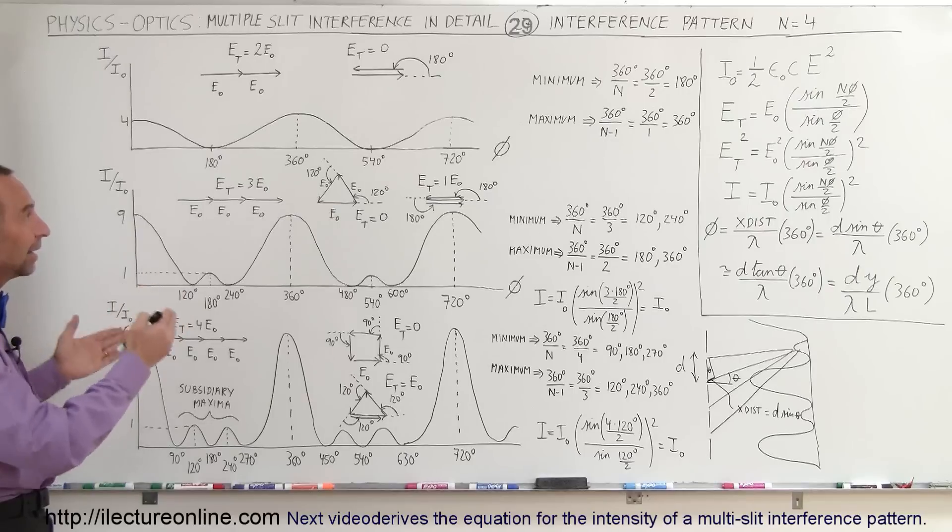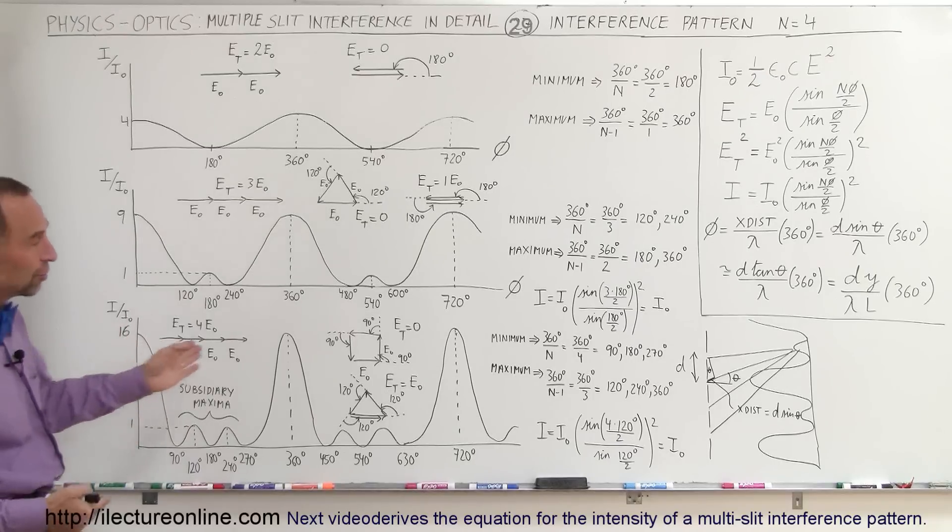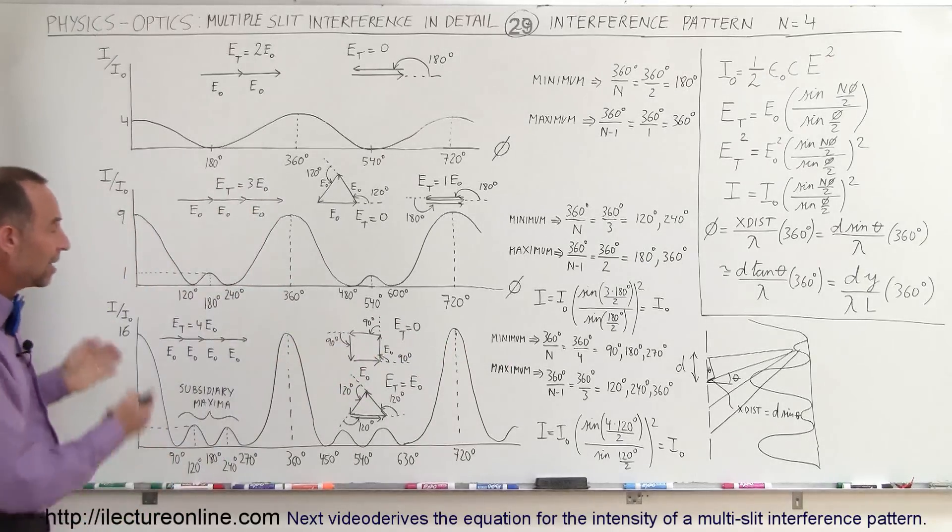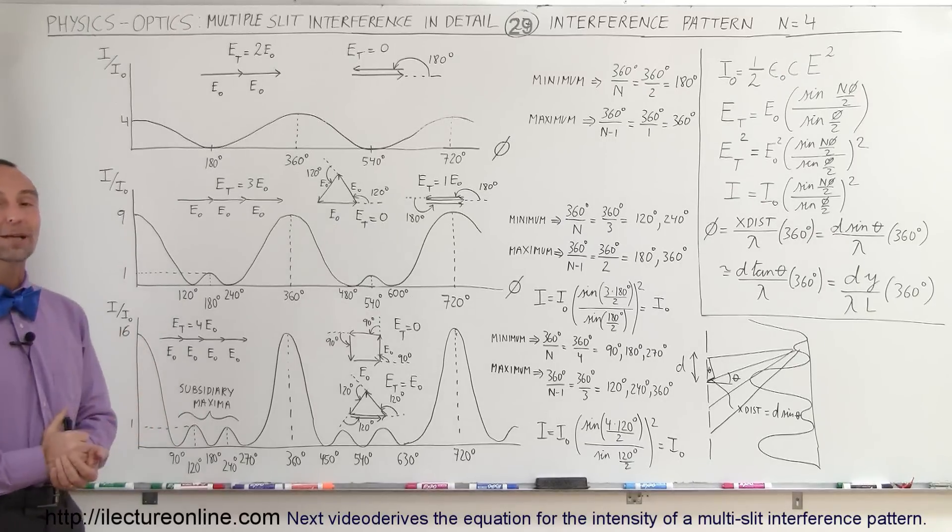And that's how you find the interference patterns, and you just keep going with that system. You have 5 slits, 6 slits, 7 slits, you follow the exact same technique, and you can then draw out what the interference pattern will look like. And that's how we do that.